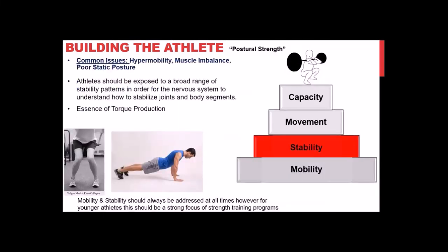The next tier is stability. Common issues with younger developing athletes include hypermobility in girls and muscle imbalances or poor static posture in guys, largely due to sedentary behavior at a young age. After confirming mobility, you need to ask: are they able to stabilize their joints properly in a reflexive manner?